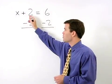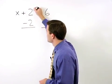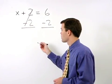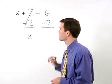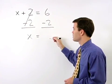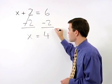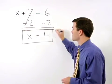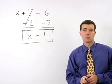So on the left side, our plus 2 and minus 2 cancel out and we're left with x. On the right side of the equation, 6 minus 2 simplifies to 4. So our answer is x equals 4.